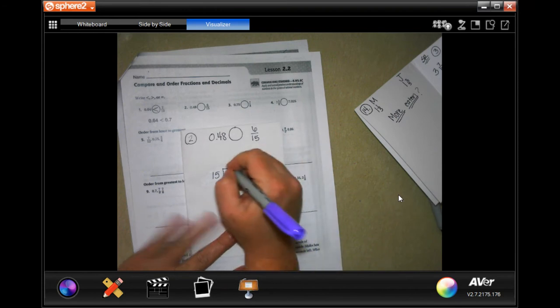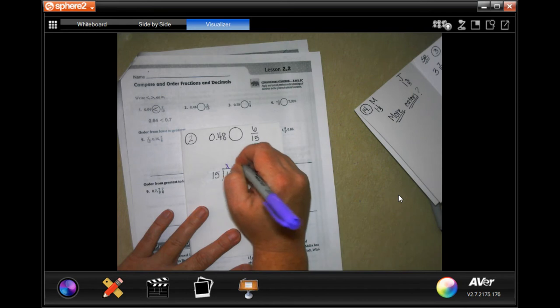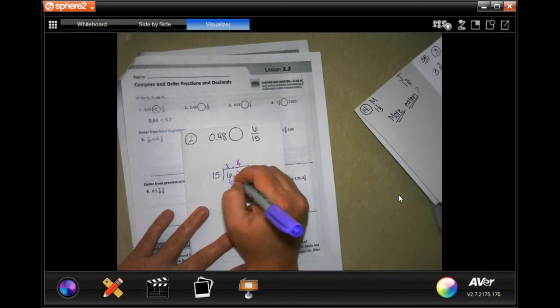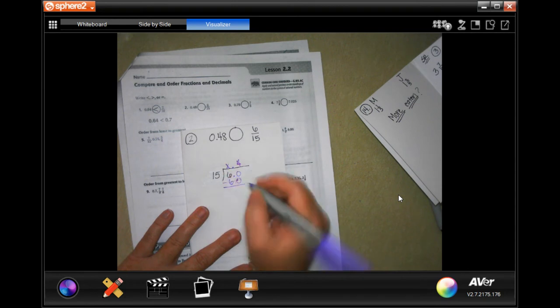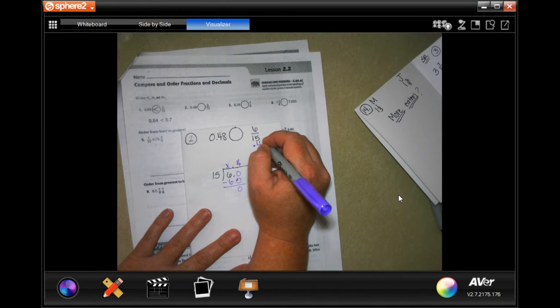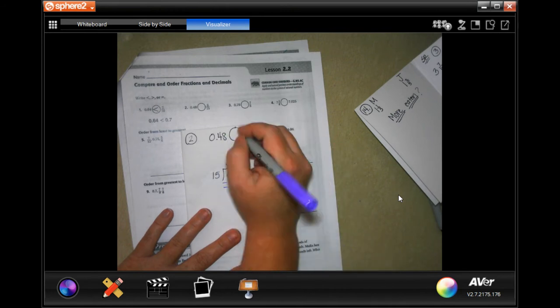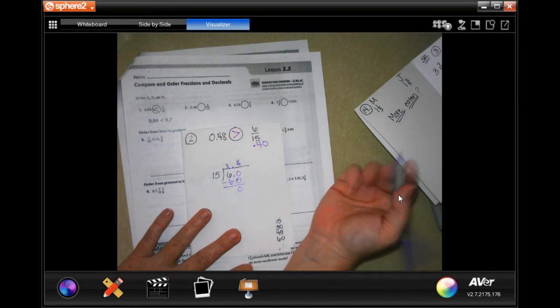So 15 is not going to go into 6. But if I put a decimal, I can put a 0 and then 15 will go into 60. I wrote those down here 4 times. So that is 60, not 6.0, just 60, and then we get 0. So this is 0.4. This is 0.48. So this one, if I want to have the same amount, I can do this. So then which one is going to be bigger? 0.48.